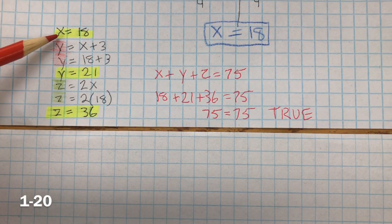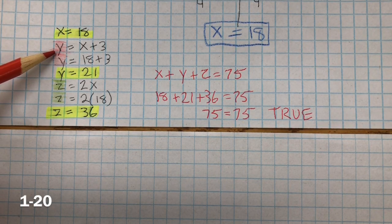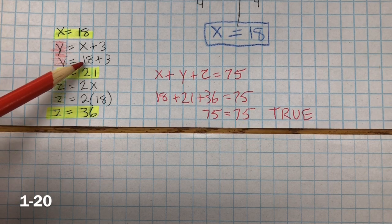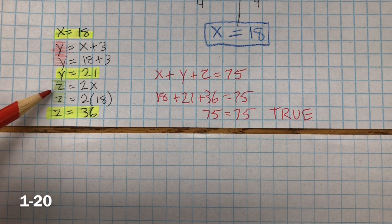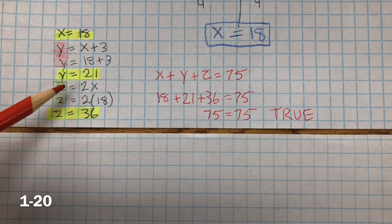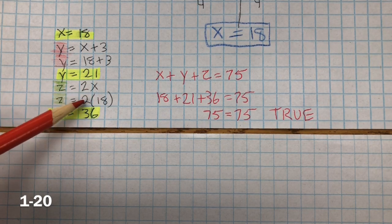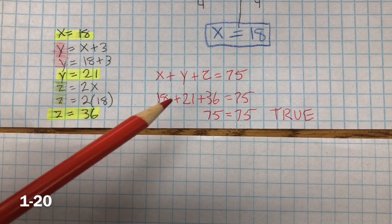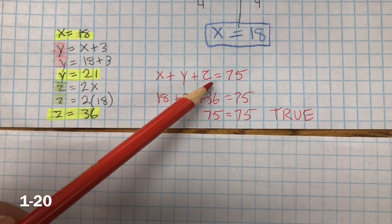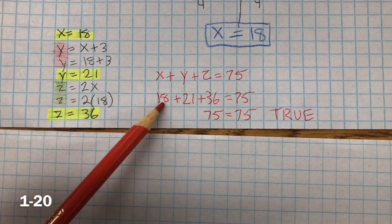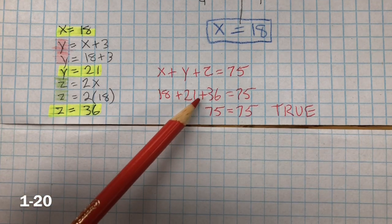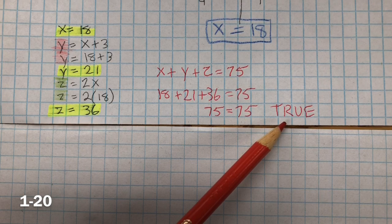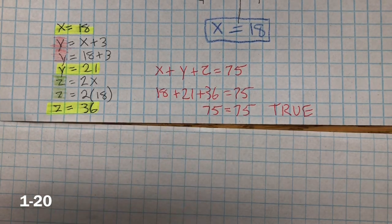So the least number, X, equals 18. The middle number, Y, is X plus 3 because the middle number is 3 more than the least number — 18 plus 3 equals 21. The greatest number is 2 times the least number: 2 times 18 equals 36. To verify: X plus Y plus Z equals 18 plus 21 plus 36, which equals 75. That's a true statement, so these are the three numbers Jabari was thinking of.